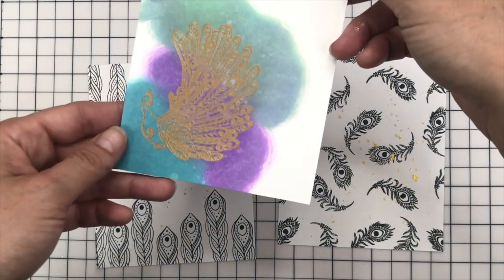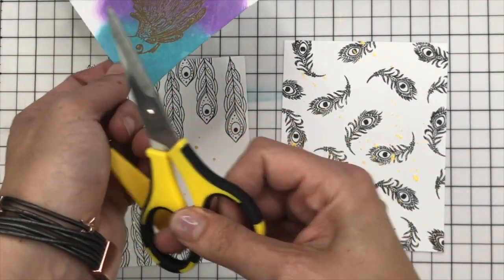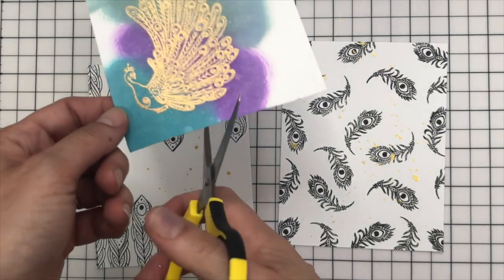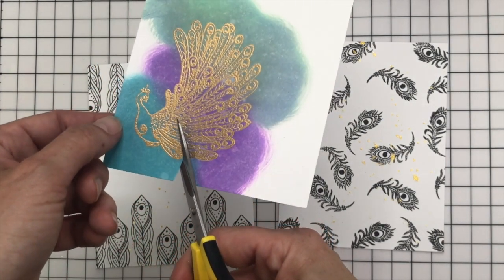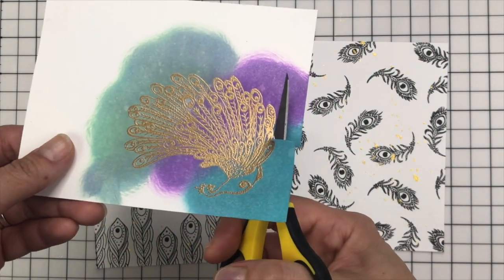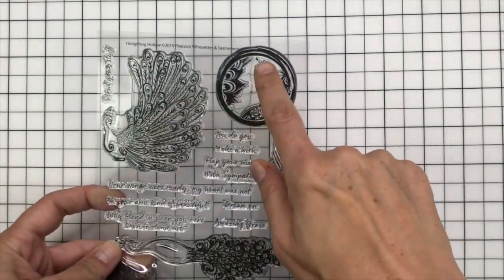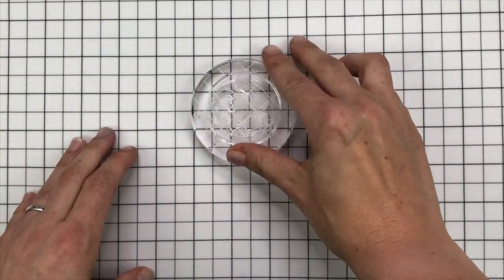I'm then going to fussy cut out this image because there aren't coordinating dies. But it's actually a really simple image to cut out even though it looks quite complicated. I'm using my UK Success Cutter Bees, they're my favorite scissors for fussy cutting. They're super sharp. And remember, tip for fussy cutting, I've got a lot better as I've practiced, is to move the cardstock, not the scissors. Just a tip.